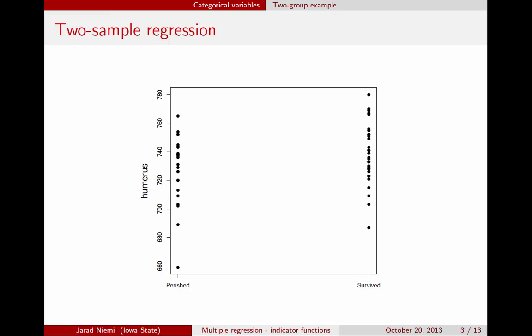Let's go straight to an example to show what I'm talking about. Here's a simple example where we might have previously used a two-sample t-test, and now we're going to put it into the regression structure. Here on the y-axis is the humerus length for finches that either died or survived. So we have two groups of individuals — those that died and those that survived — and we're looking at their humerus length. The main question of interest is whether the mean humerus length is different between these two groups. We can actually treat this problem as a regression problem by essentially making numeric quantities for perished and survived.